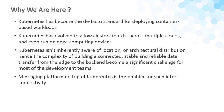Why are we here? As many of you already know, Kubernetes has become the de facto standard for deploying container-based workloads. It's so popular and fully featured that Kubernetes has evolved to allow clusters to exist across multiple clouds and even to run on edge computing devices, even small ones. But Kubernetes isn't inherently aware of location — it's like an abstraction layer on top of some kind of computing resources or architecture distribution. Hence, the complexity of building a connected, stable, reliable data transfer from edge to backend becomes a very significant challenge for most development teams.